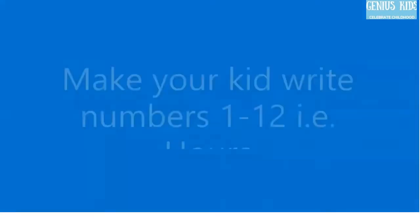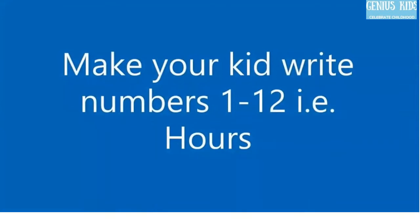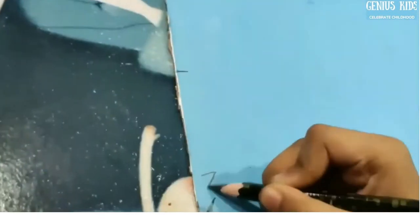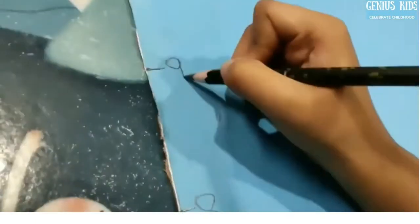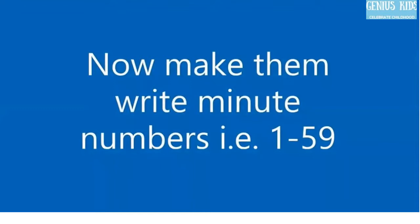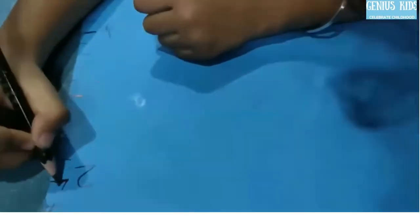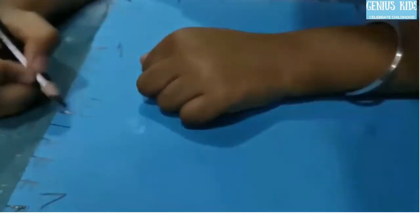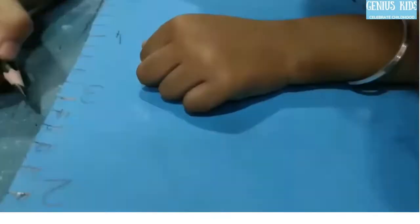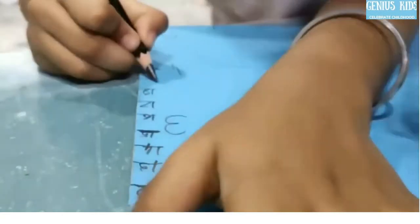First we need to make the marking for the hours, so make 12 markings and let your kids write numbers 1 to 12. Now once you are done with this, we will make them write minutes. We are going to write numbers 1 to 59. Make the marking accordingly and let them write.